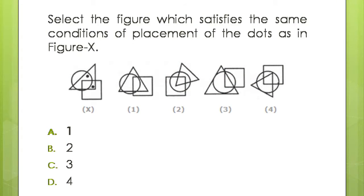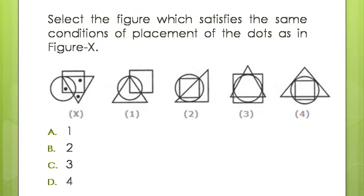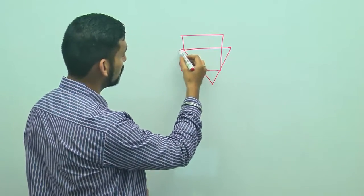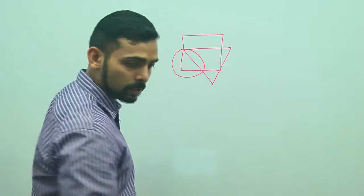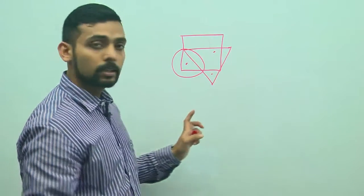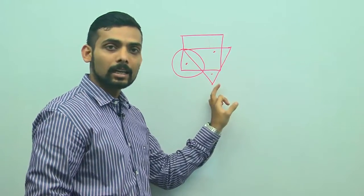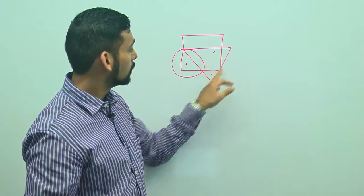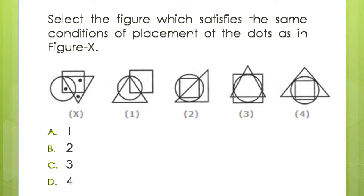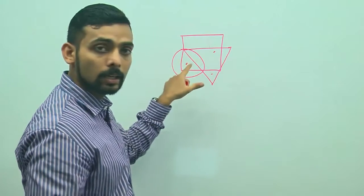Now let's increase the difficulty level even more — let's work with 3 dots. I have a figure in front of me with an inverted triangle, a square, and a circle. My conditions are: I need one area covered exclusively by the triangle, one area covered by the triangle and the square but not the circle, and one area covered by the square and the circle but not the triangle. I will put one dot in each of these areas.